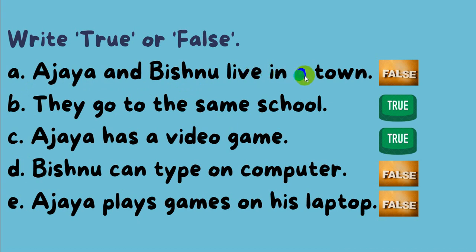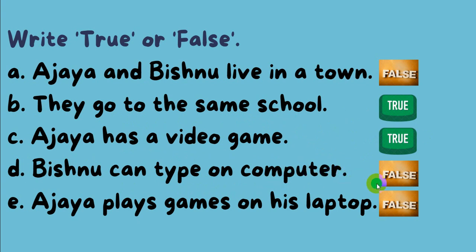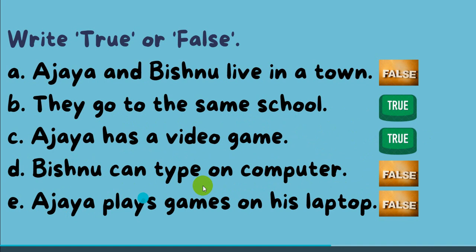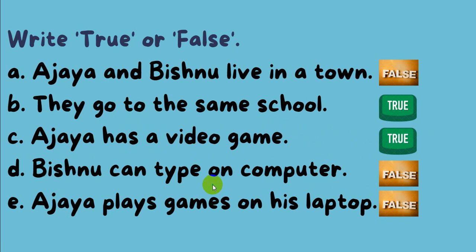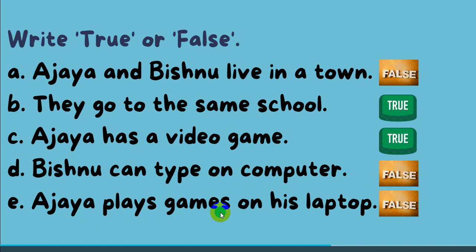Ajay and Bisnu live in a town — this is false. This means they live in a village. If they go to the same school, this is true. Ajay has a video game — this is true. Ajay can type on a computer — this is false because he types on a laptop, not a computer.